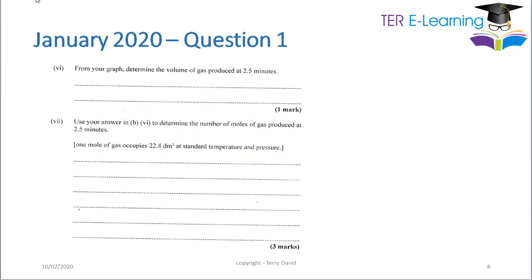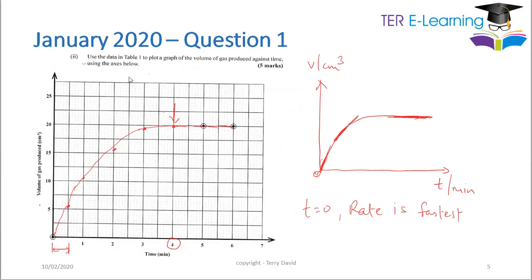From your graph, determine the volume of gas produced at 2.5 minutes. All you need to do is read off from your graph what happens at 2.5 minutes. Reading from the curve, that gives approximately 17.5 cm³. You may get a slightly different value based on your own graph reading.